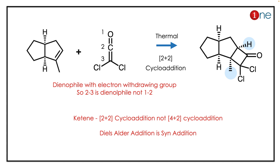With the methyl and hydrogen below the plane, the final product is a fused ring system with proper numbering. The key concept to learn is that ketenes undergo [2+2] cycloaddition, not [4+2] cycloaddition. The Diels-Alder reaction is a syn addition — you always end up with a syn product.